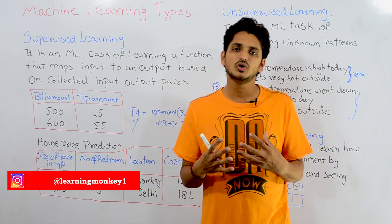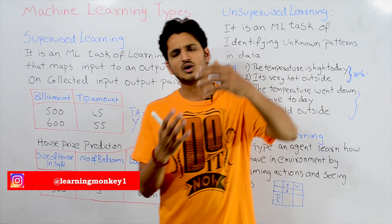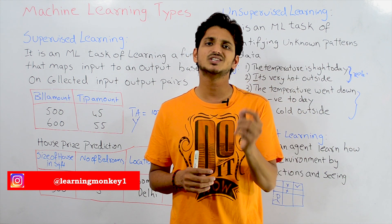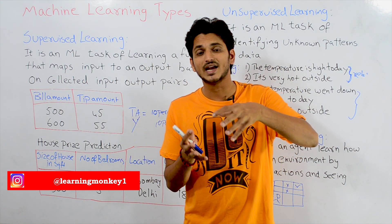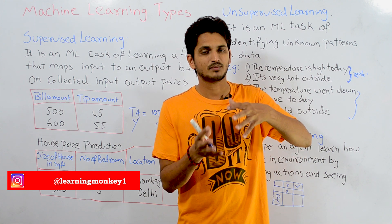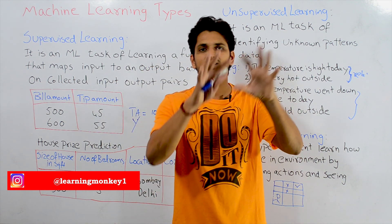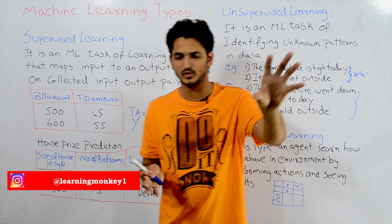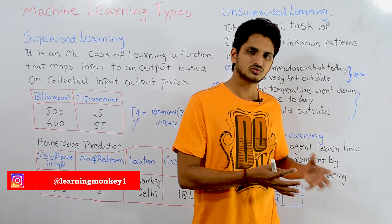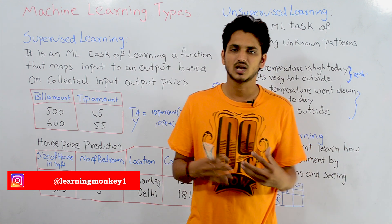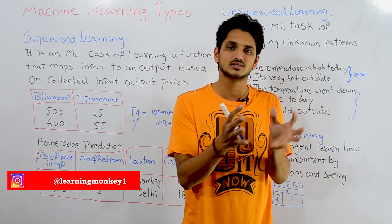This type of problem comes under unsupervised learning. Let's take one more example. We are given all the movie plots — a plot means a description of the story. From that, we have to identify unknown data patterns. Based on the description, we identify that this set of movie plots belongs to action movies, this set belongs to comedy movies, this set belongs to suspense movies, and so on. Similar items are grouped together — this is what unsupervised learning does.